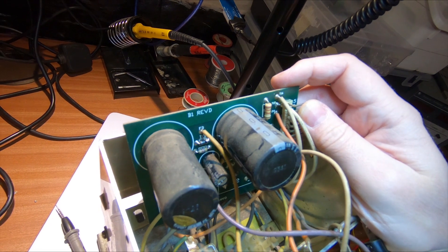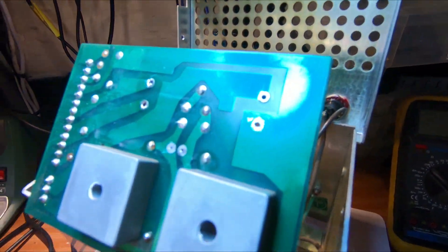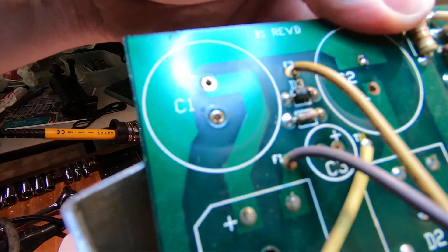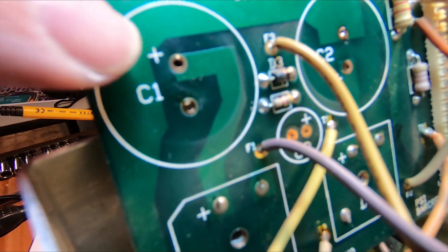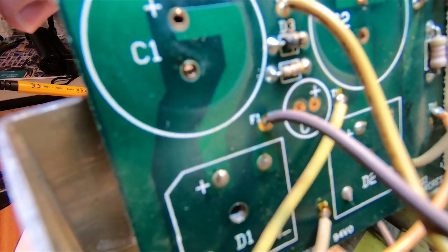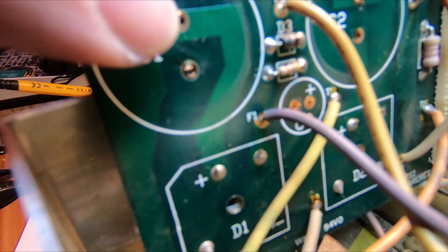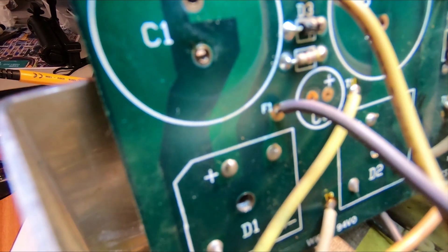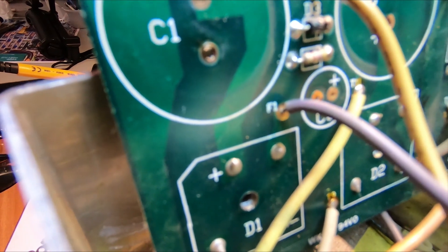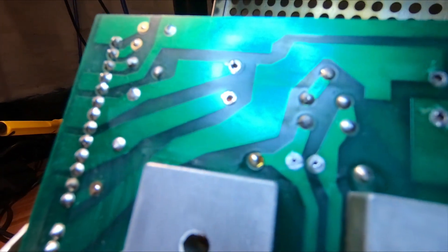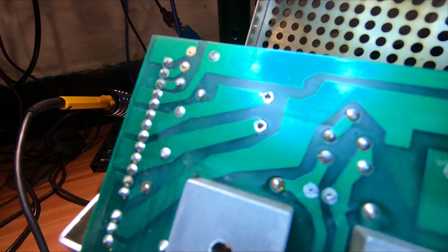I've got the capacitors unsoldered from the board now. It's just worth noting this board has got the polarity marked with the plus. Electrolytic capacitors are directional so they need to be the right way around. If the markings aren't on the board, it's worth making a note of where that polarity is before you unsolder it.